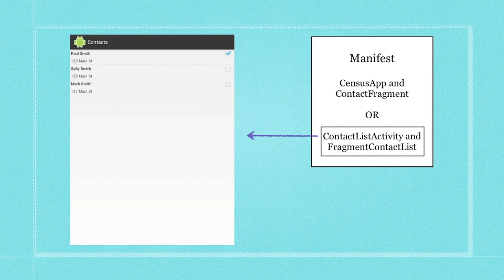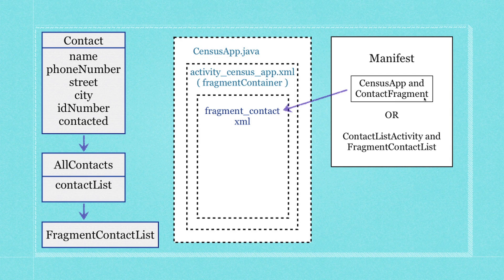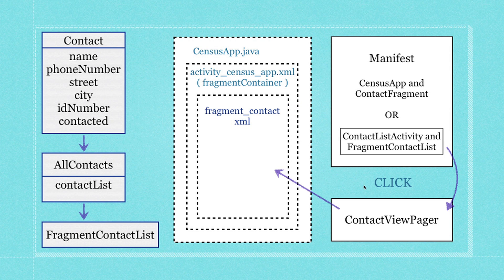To make what you just saw, we had these list items representing all the different people we had to contact. Previously if you clicked on one of these guys, census app would fire and load the contact fragment. Now if we want to allow people to flip back and forth through all the different contacts, when they click on the contact list activity we're going to send them to a new class called ContactViewPager and load up all the pages representing all the different contacts in our ArrayList.